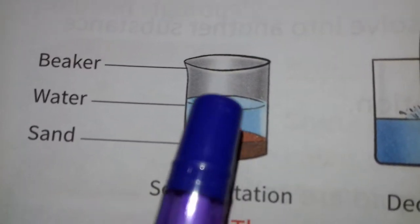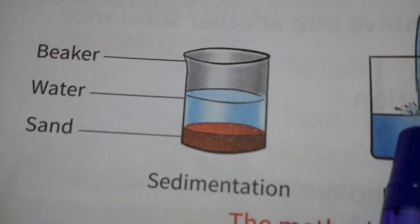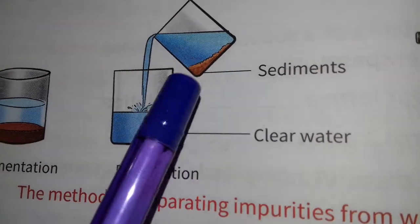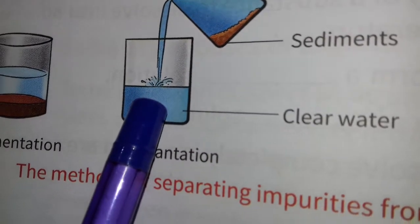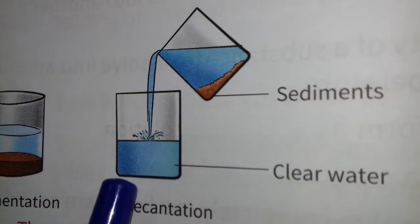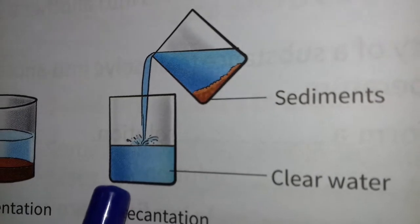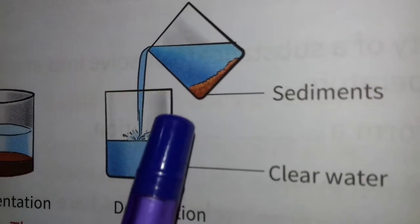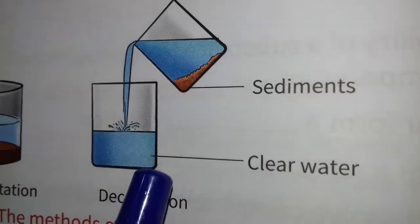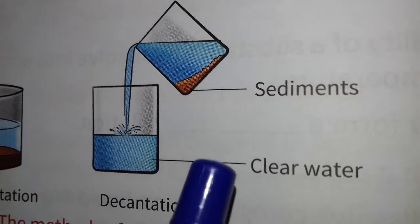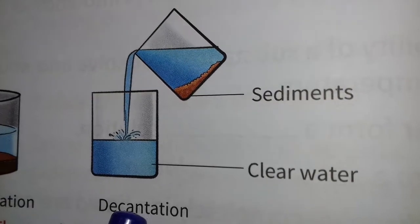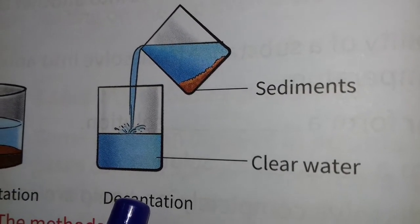The clear water is obtained by pouring it into another container without disturbing the sediment. You can see this in the picture. This process of obtaining liquid from the insoluble solid is known as decantation. So first is sedimentation and the next is decantation.